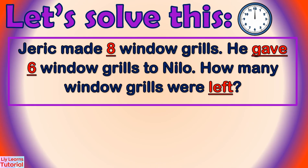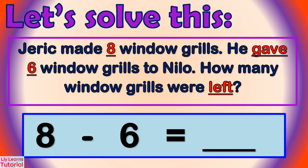Derek made 8 window grills. He gave 6 window grills to Nilo. How many window grills does he have left? 8 minus 6 equals 2.